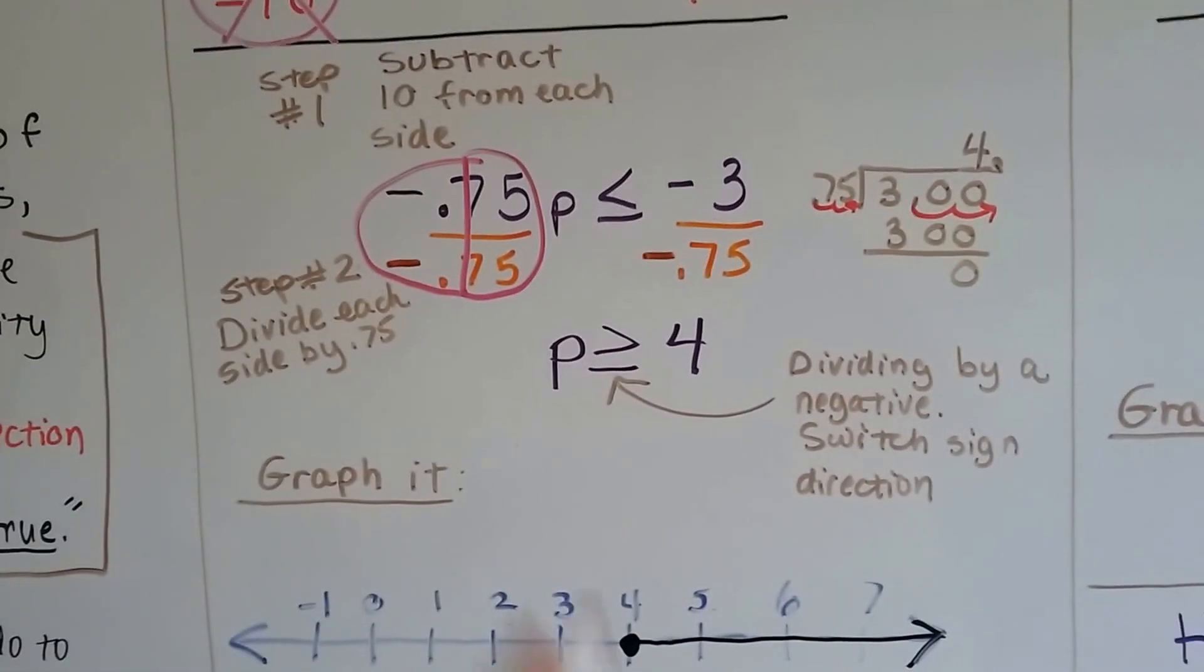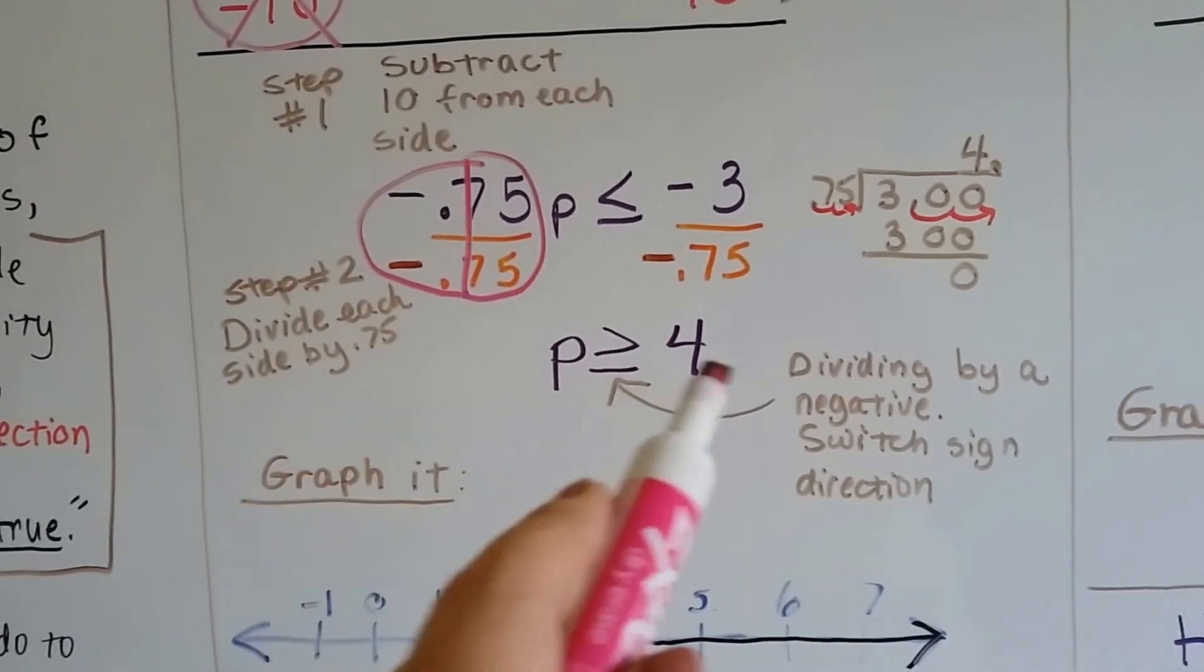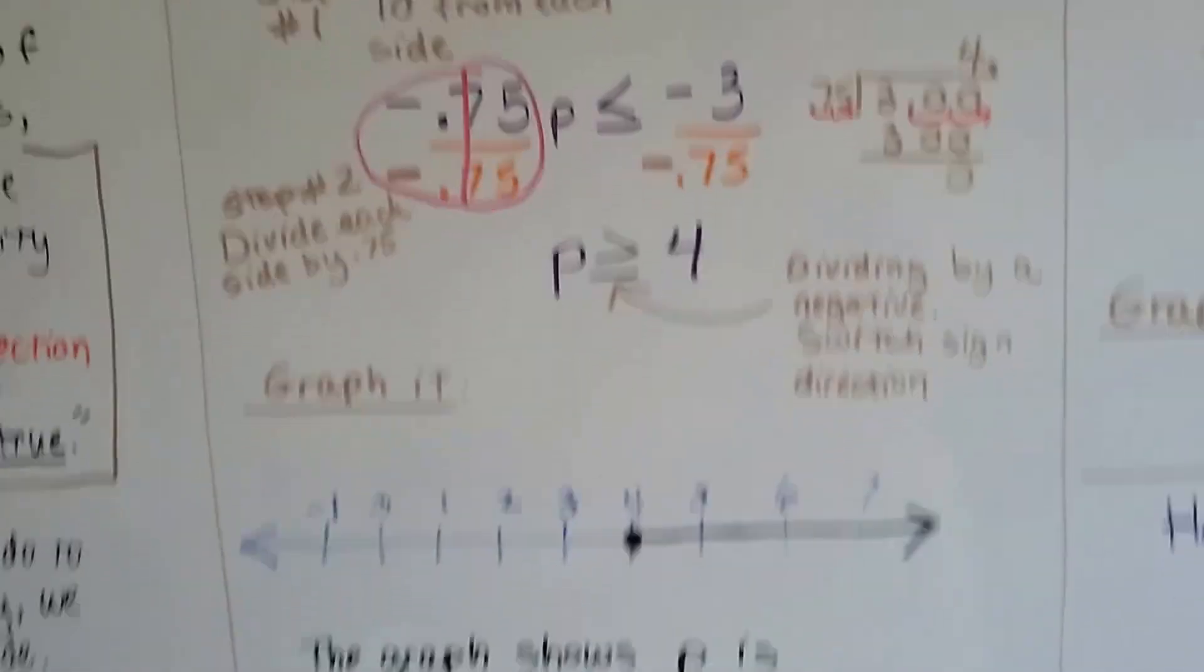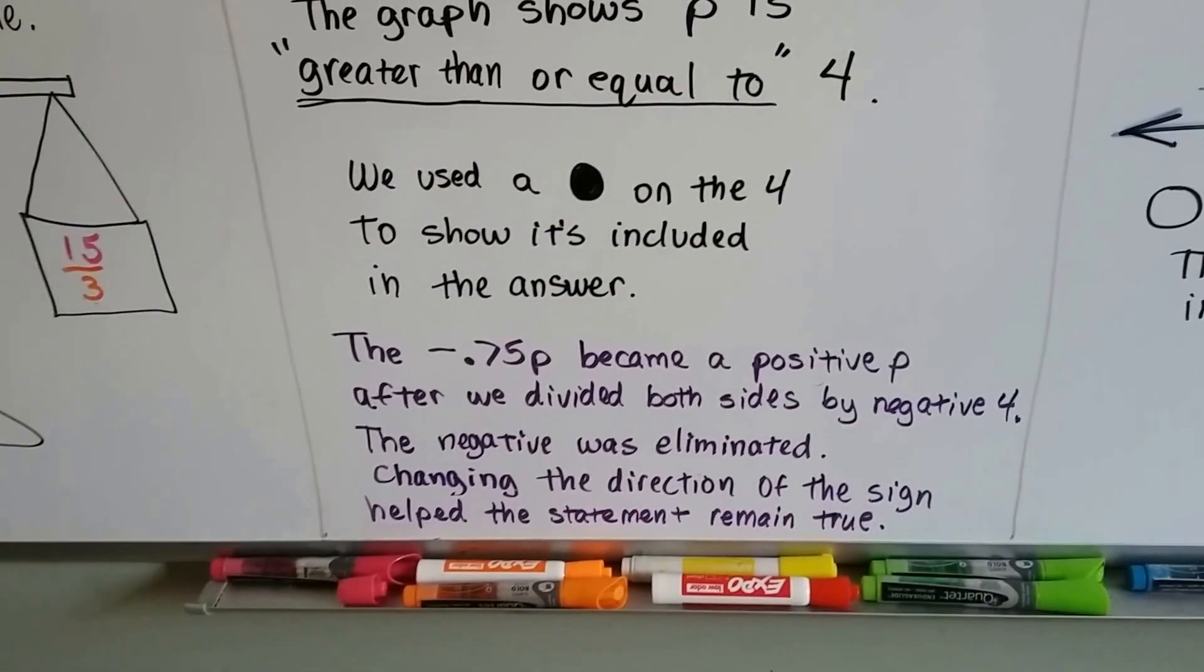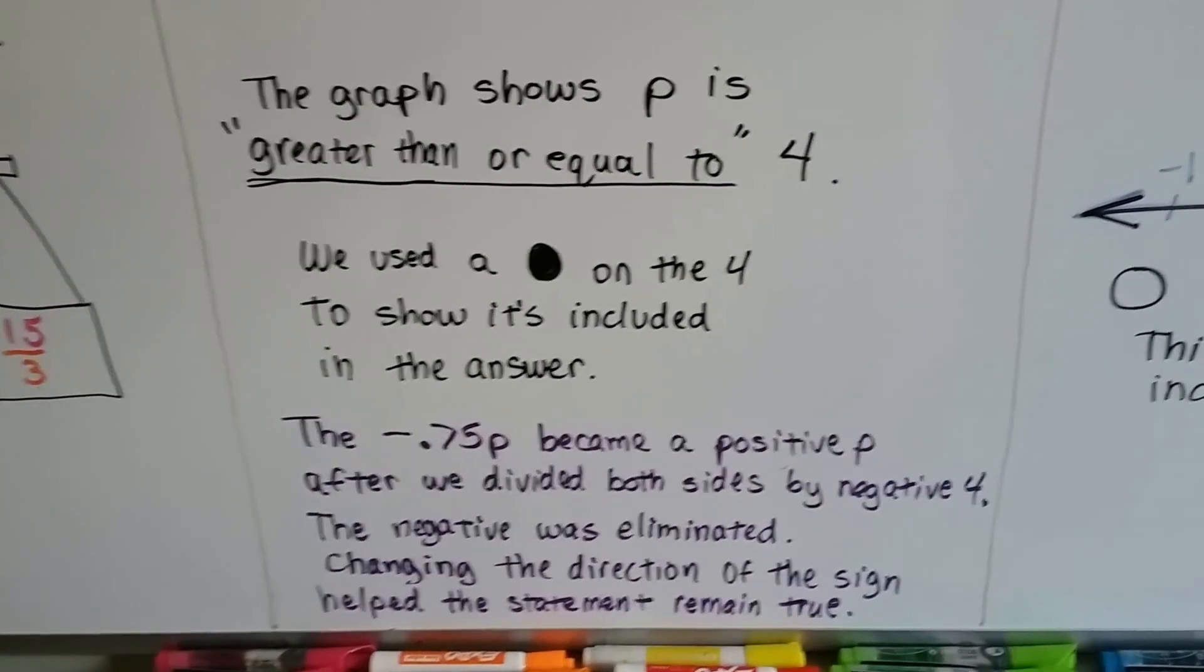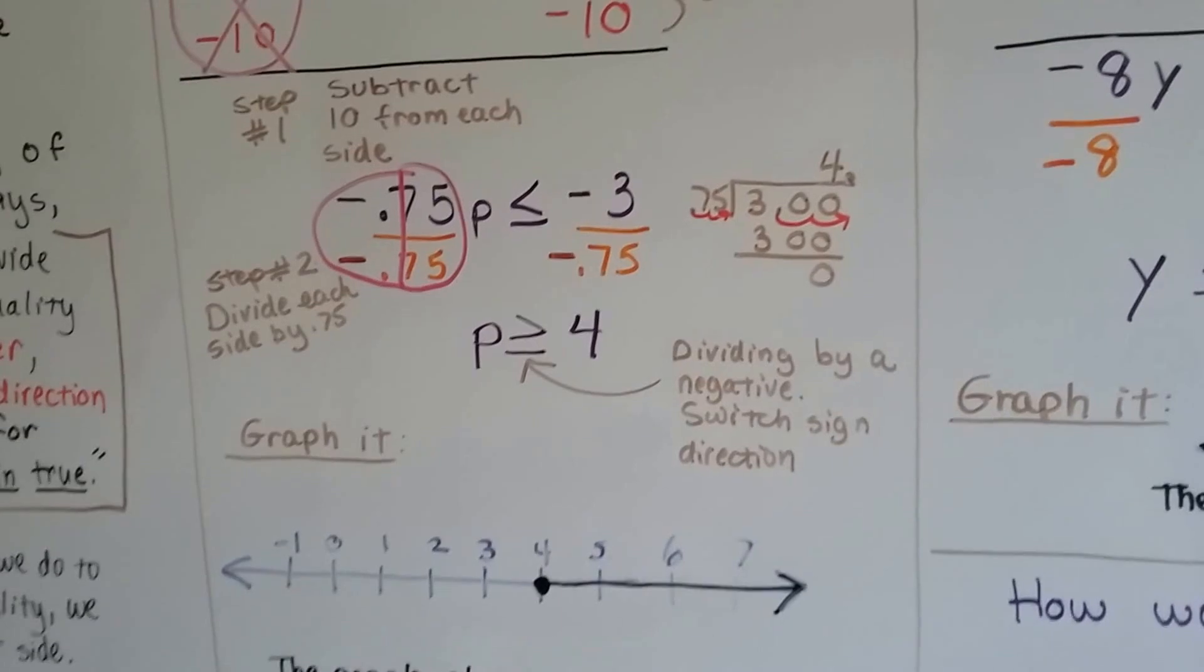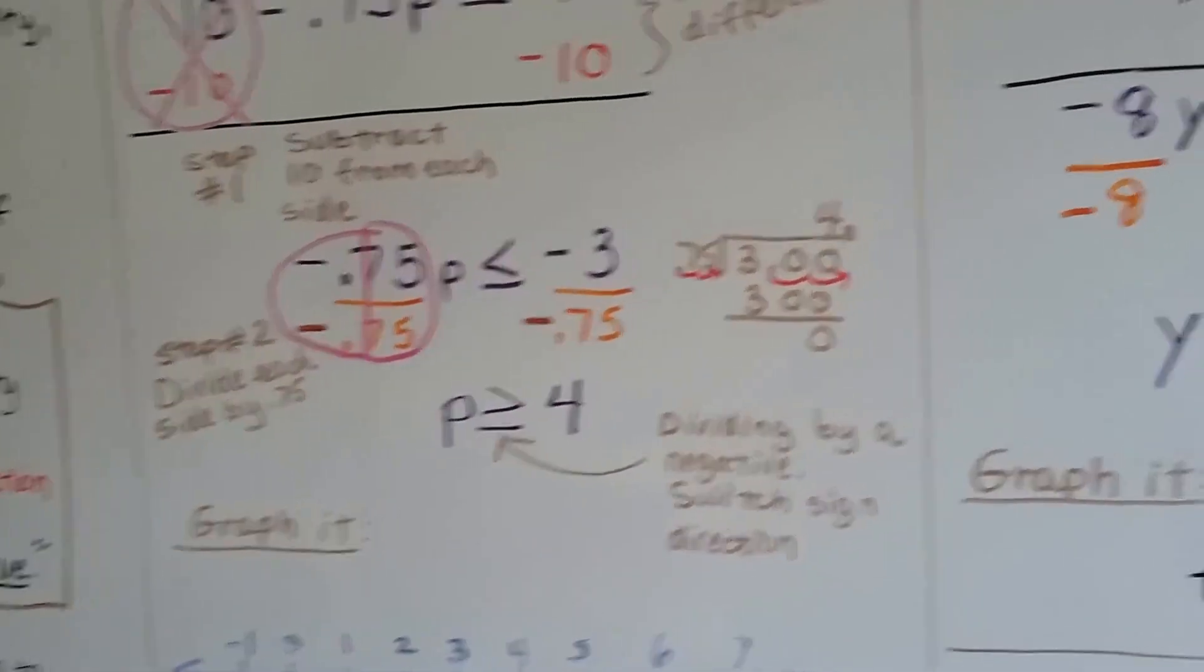That's why we have to switch the sign around. Because it's not greater than a negative number, it's smaller than a positive number. And it's not smaller than a negative number, it's greater than a positive number. It flips it around. So, because that negative was eliminated, changing the direction of the sign helped the statement remain true. That is why we switched the sign around. We're getting rid of that negative and turning the p into a positive.